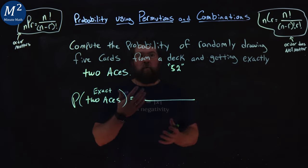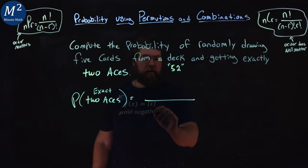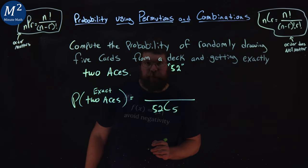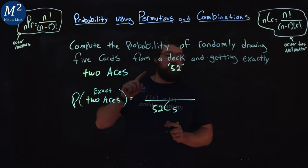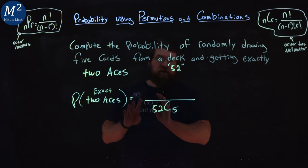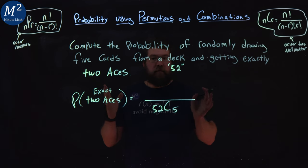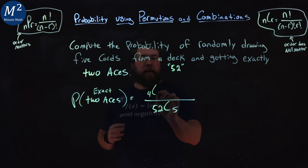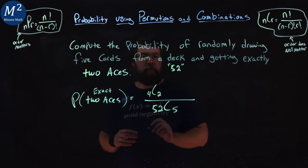Our total number of ways to get five cards from a deck would be 52 choose five. Now if we need to get two aces from the deck, there are a total of four aces in the deck, right? So there's four of them and we have to get two of them.